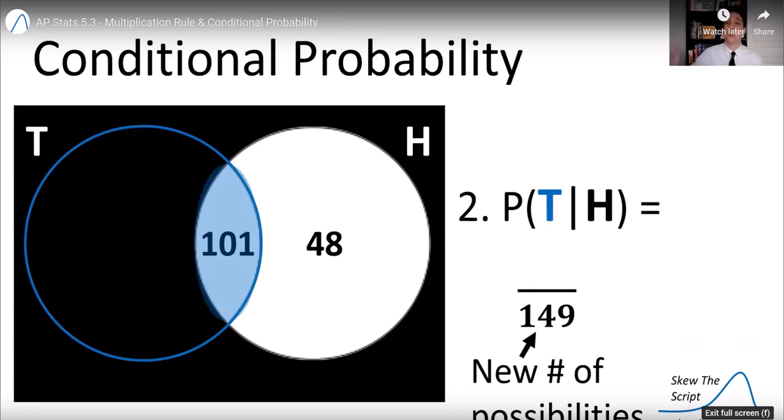And now we look for the people who are tall, given their high income earners. So that's the 101 who are both. And that is our numerator. So this probability is 67.8% if you do that division.